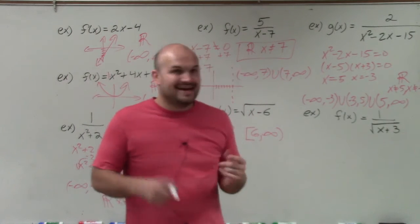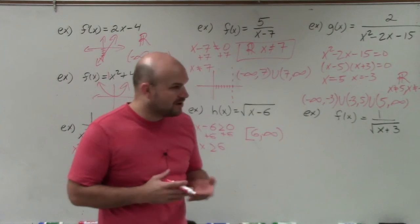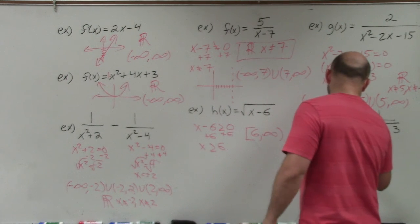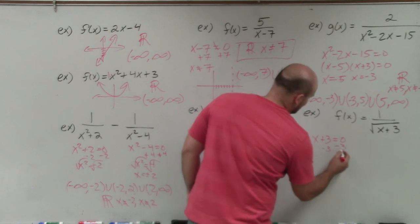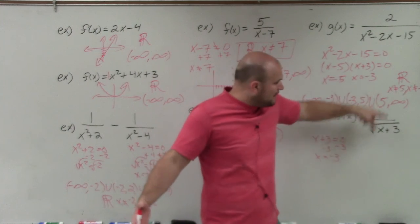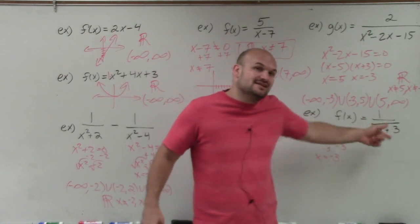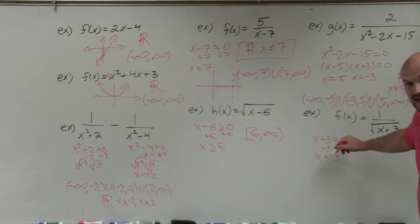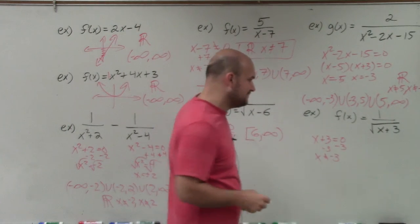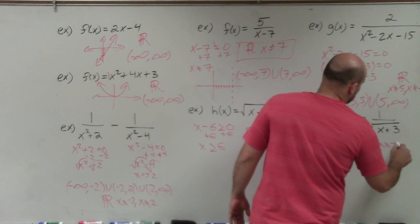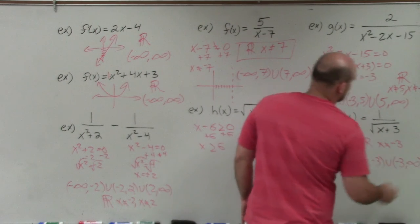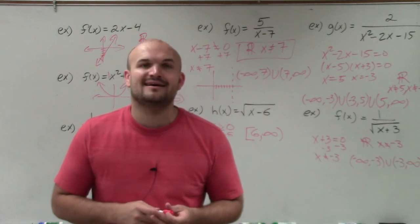What about when we have a radical in a rational function — both a radical and a fraction? Setting x plus three equal to zero gives x equals negative three. Now, negative three plus three equals zero — that's okay for the radical since we can have zero under it. However, the square root of zero is zero, and we can't have zero in the denominator. So x cannot equal negative three. The domain is all real numbers where x cannot equal negative three, or in interval notation, negative infinity to negative three, union negative three to infinity. That is how you determine the domain of a function.